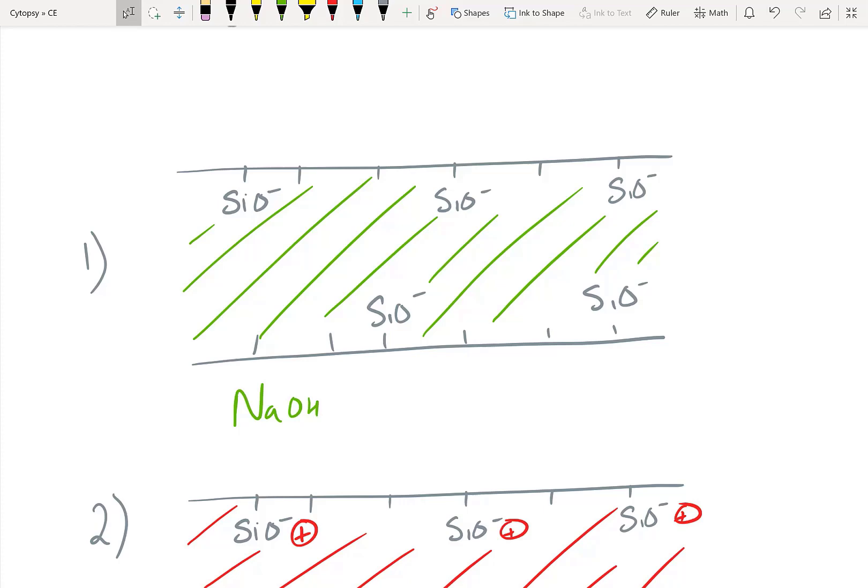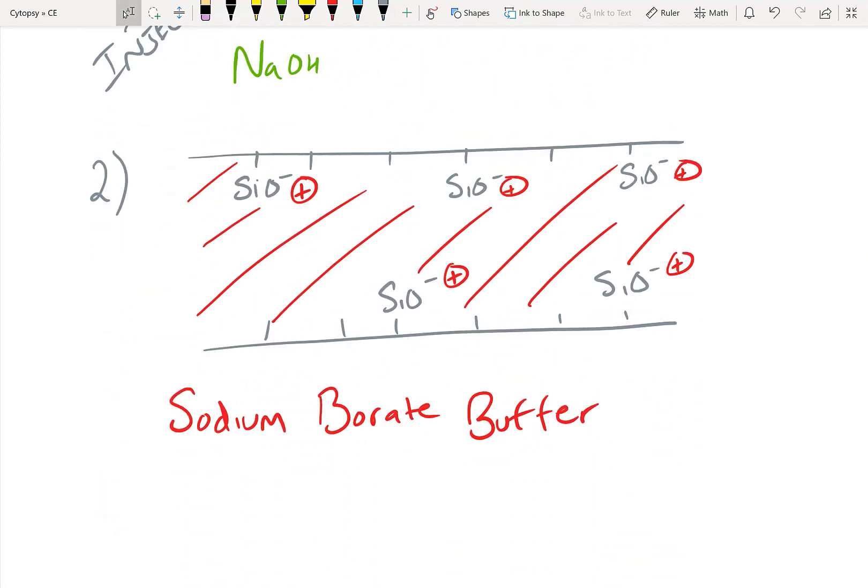So when we do our rinse, it said that the first rinse is with sodium hydroxide. What that means is we're going to inject sodium hydroxide in, and this is going to cause all of our silane groups to deprotonate. The next rinse was with borate buffer. When we add the borate buffer, again we inject it in, and borate buffer is going to make it so that there is buffer lining the entire capillary, and all of our silane groups are properly protonated, and our diffuse layer is set up properly for normal polarity capillary electrophoresis.